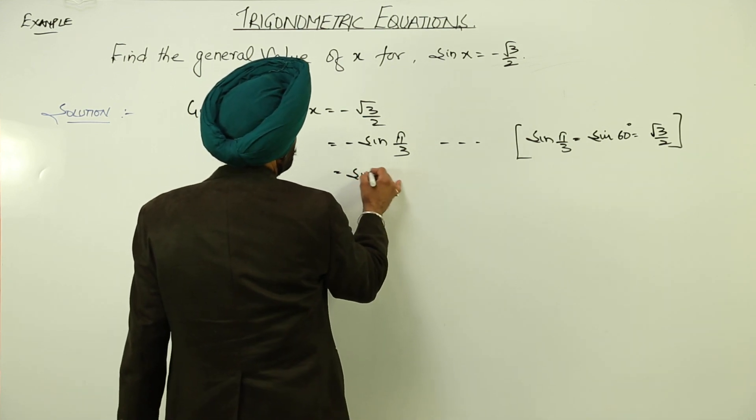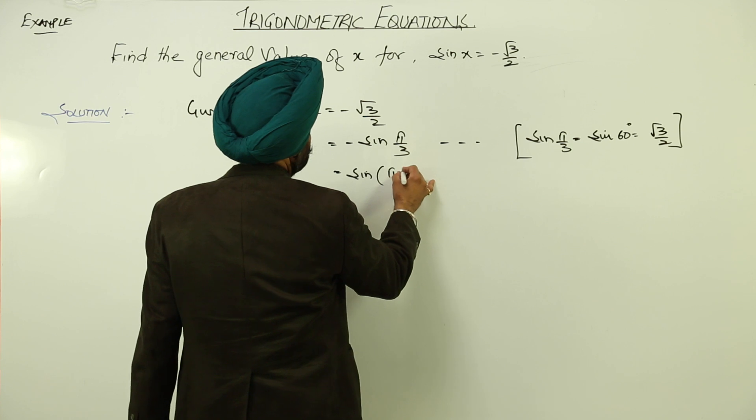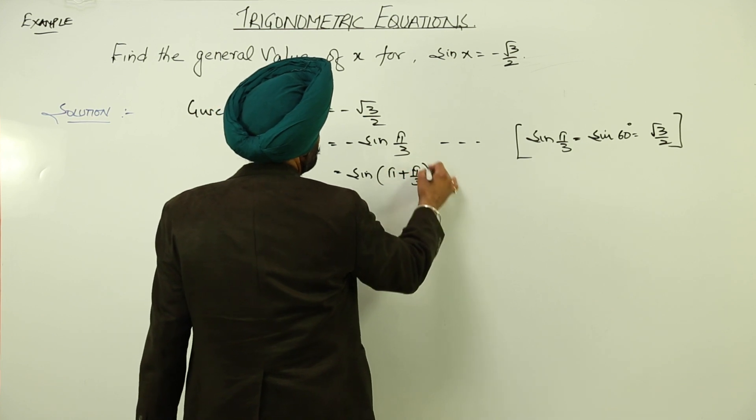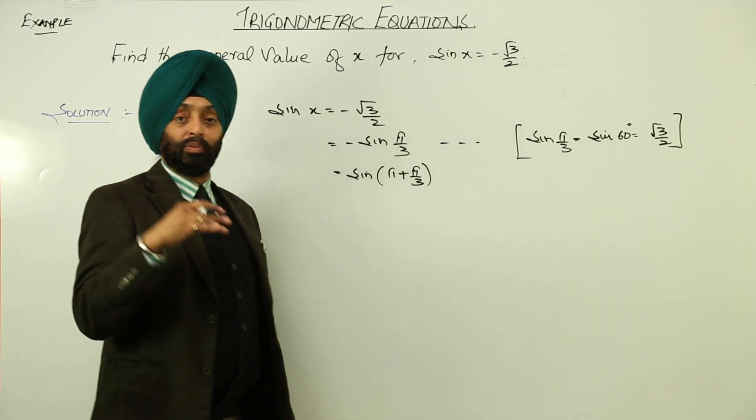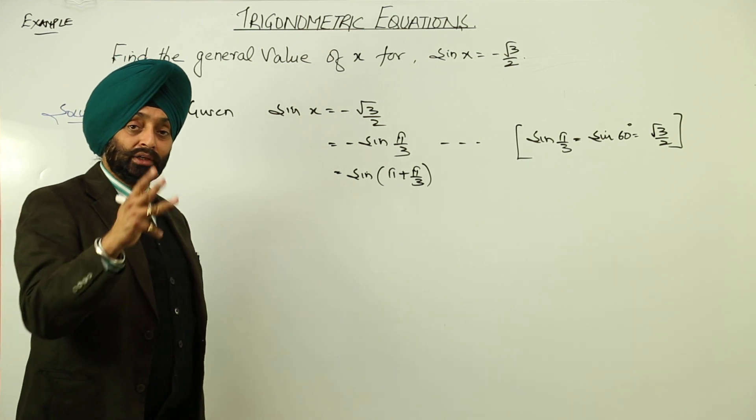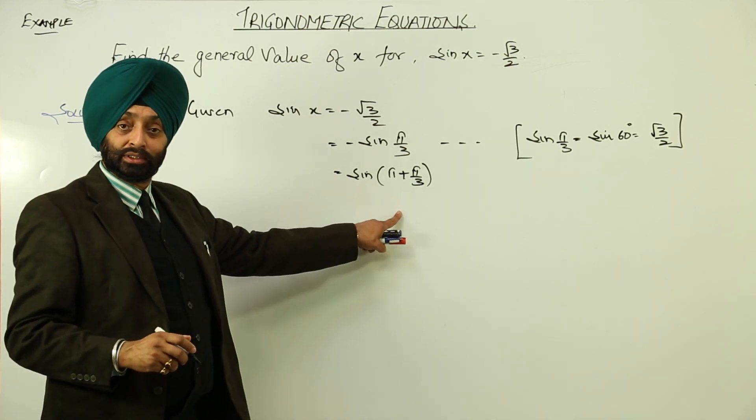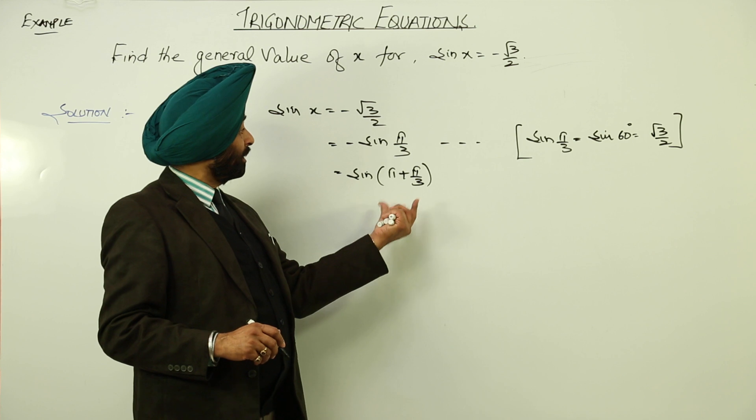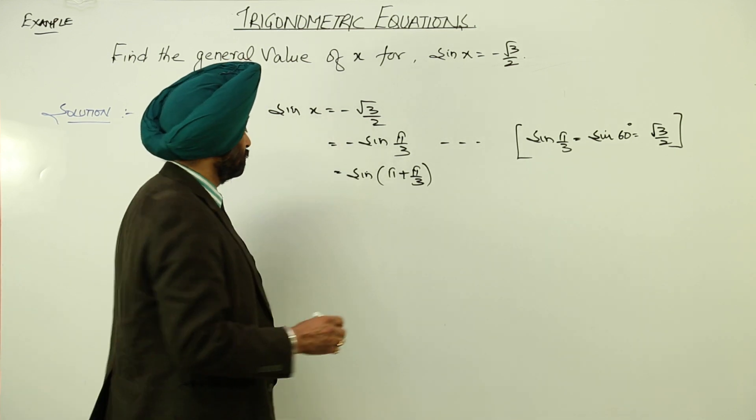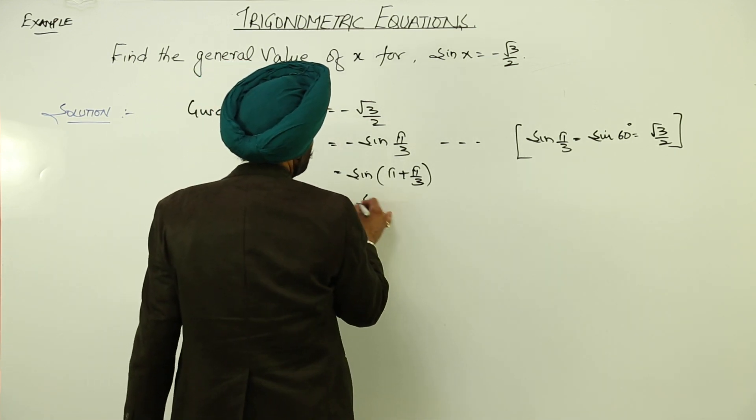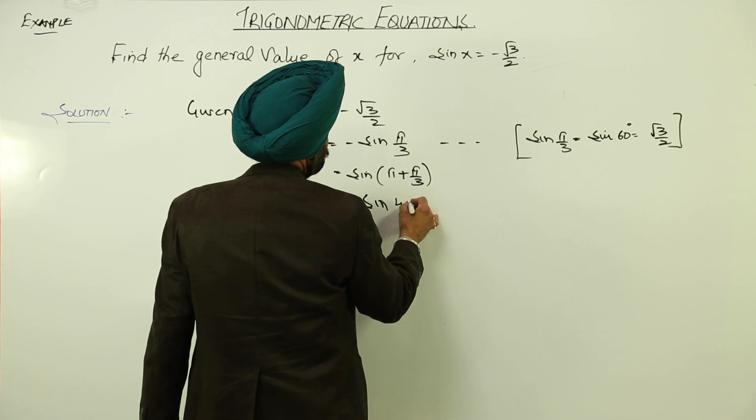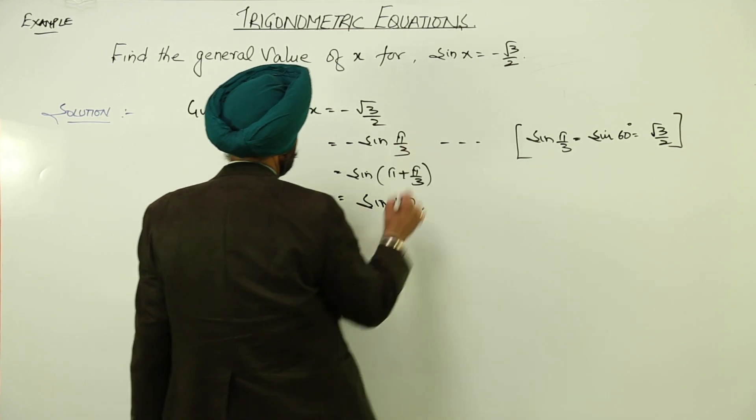To this we can write it sin pi plus pi by 3. Because sin pi plus means in which quadrant? Third quadrant. And in third quadrant, sin is negative. So overall result will be negative root 3 by 2. So this becomes sin 4 pi by 3.